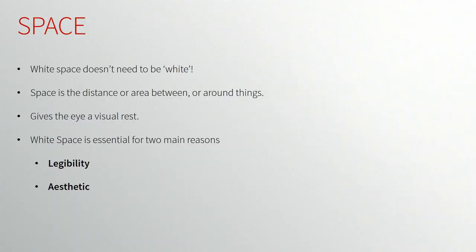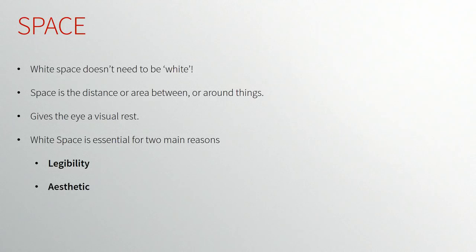Finally, moving on to space — something we look at in much more detail in lesson eight, especially when designing for screen. Space, or white space, doesn't actually need to be white — it's basically empty or negative space. It's the distance between or around things. We need space in design to give the user's eye a visual rest and to guide the user's eye. In design, we use space to tell the user where to look. Space is also very important for legibility — text needs space around it to be readable. Aesthetically, people tend to prefer things that are uncluttered and more elegant. It also makes text less intimidating: no one likes huge paragraphs of text with no space around them.